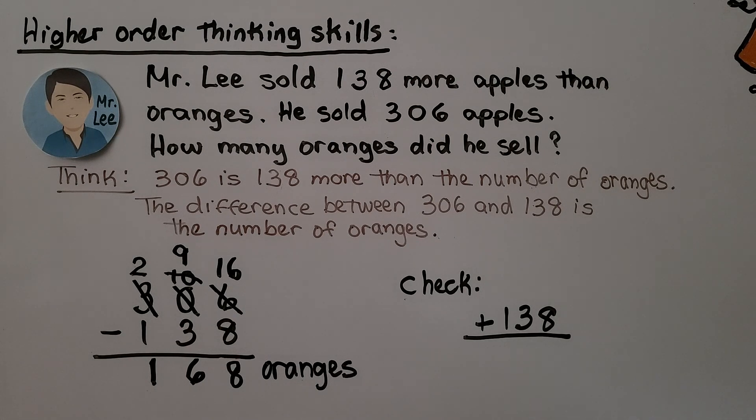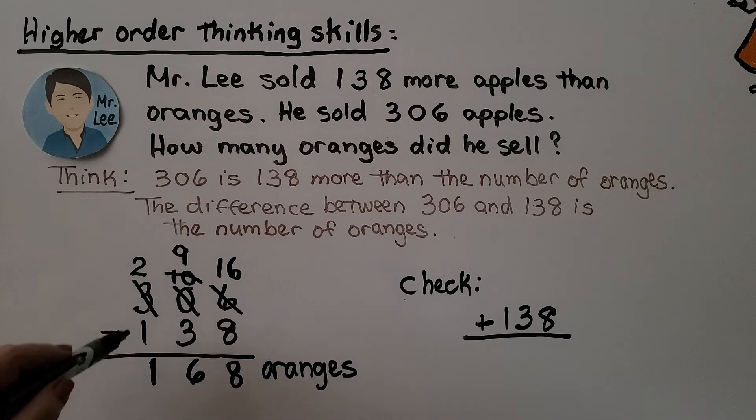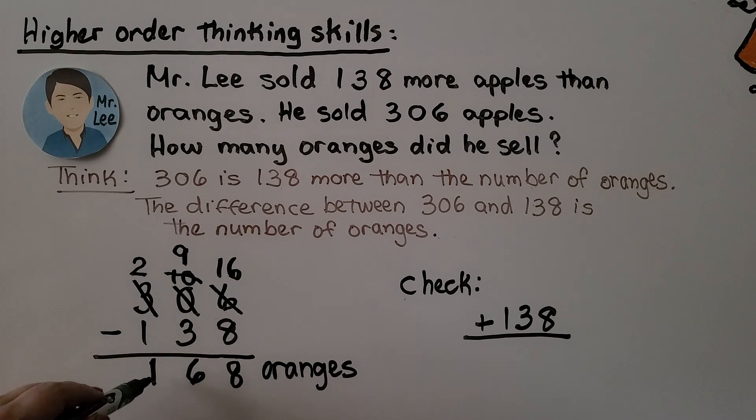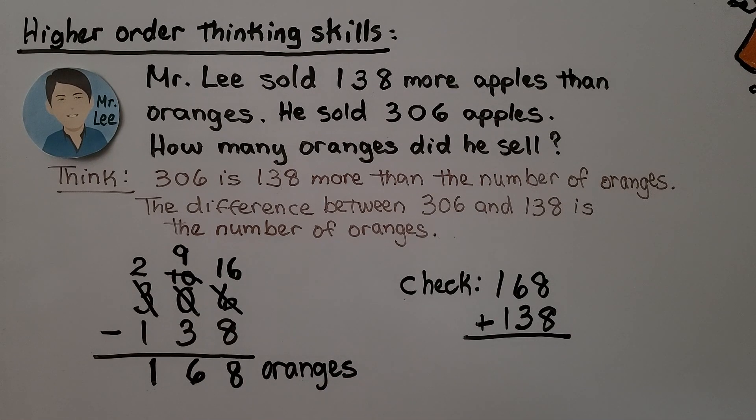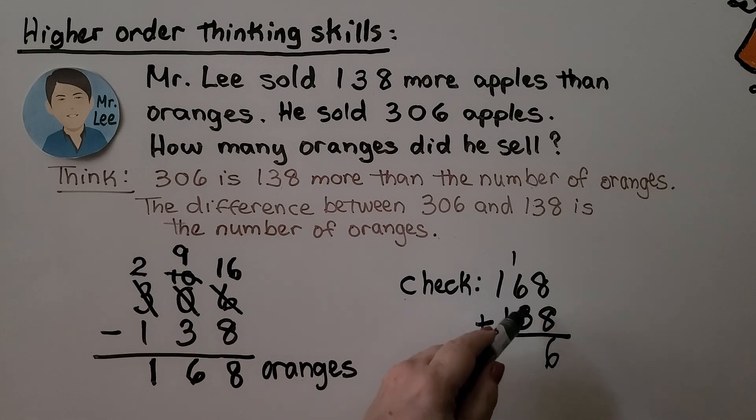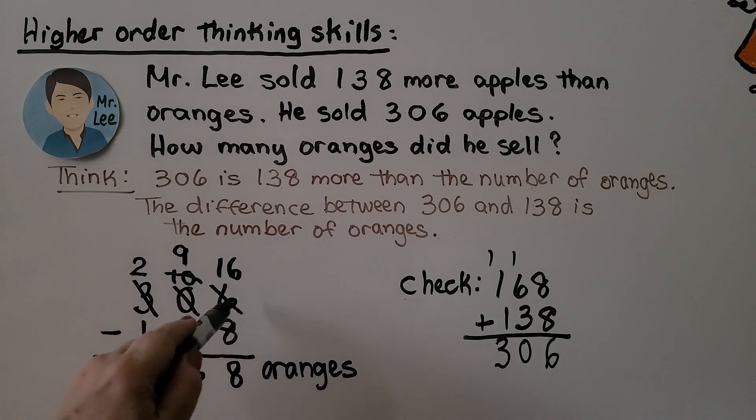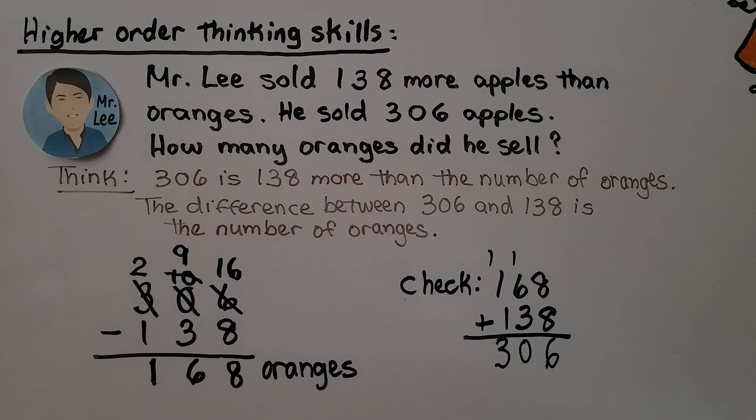9 tens minus 3 tens is 6 tens and 200 minus 100 is 100. We know he sold 168 oranges. We learned in the last video that we could check our subtraction by adding the subtrahend and the difference. If we add 168 plus our subtrahend 138, it should equal the 306 minuend we started with. 8 plus 8 is 16. We regroup a 1, put the 6 in the ones place. 6, 7, 8, 9, 10. We regroup it, put a 0, and we have a 3. 306. That was our original minuend so we know we did our subtraction correctly.